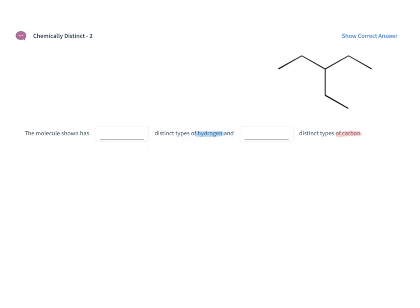There's no way to differentiate those three ethyl groups. For example, if I were to put a mark on this carbon right here and then I were to take this molecule, spin it around, turn it over, twist it around, you wouldn't know which one I marked. That's because all three are chemically equivalent.